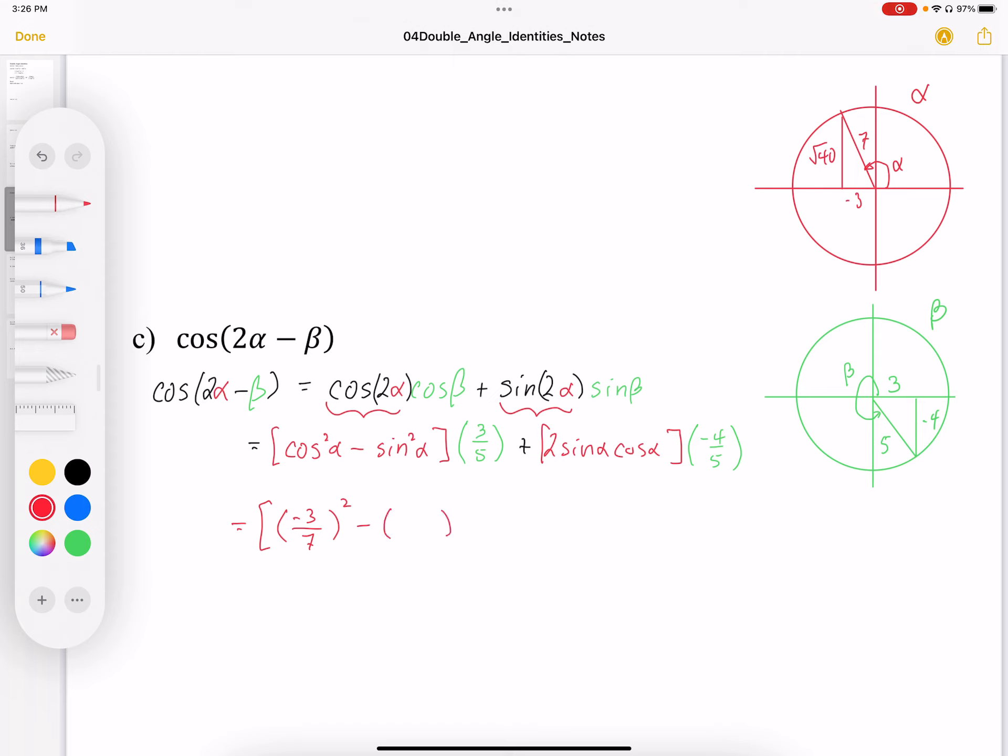Minus. I've got sine squared. So where I take a look at my picture for sine, the sine is going to be root 40 over 7. And then I have already worked out my value for cosine beta, which is 3 over 5 plus.